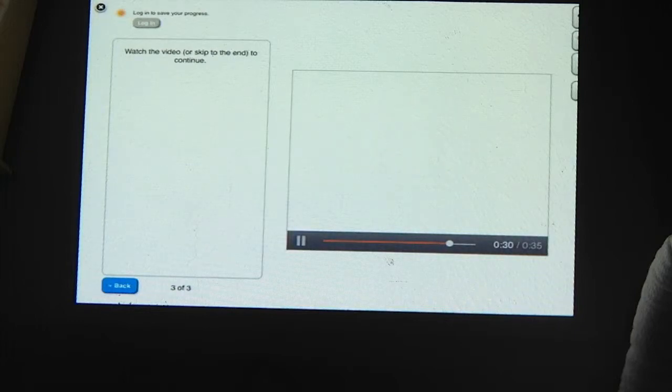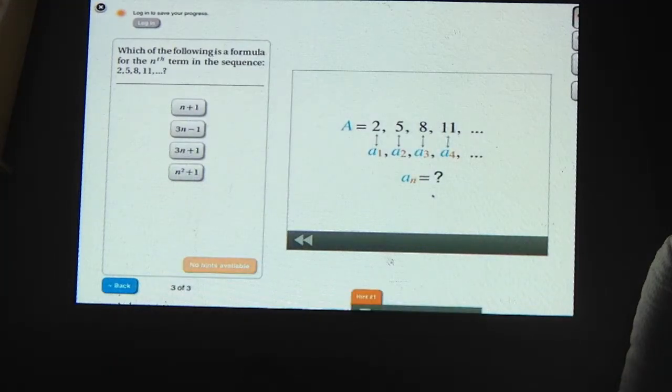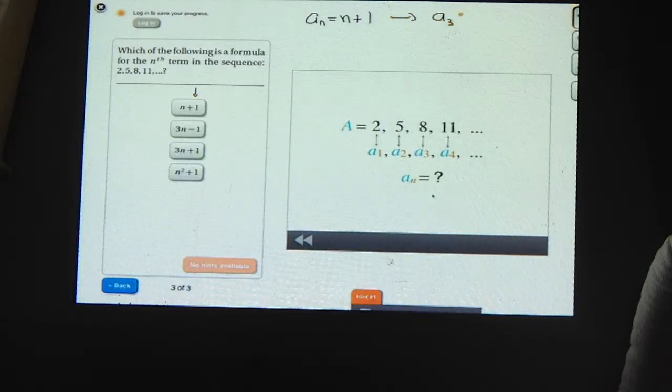Let's return to our original sequence. Try finding a formula for the nth element of this sequence. Let's try the formulas one by one. The first formula says that a sub n is equal to n plus 1. That's this formula here. If that was true, then a sub 3, for example, would be 3 plus 1 or 4. But we know from our sequence that a sub 3 is 8. So that's not right.